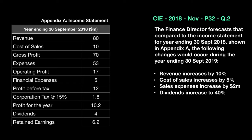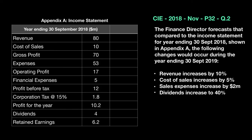Remember, whenever you're given a statement in the question, you use the same format. So what you simply do is make a new column next to the existing income statement — this new column is our income statement for the year ending 2019. Let's begin with the first change: revenue has increased by 10%. Last year it was 80, and 10% of 80 is 8, so the new revenue becomes 88.